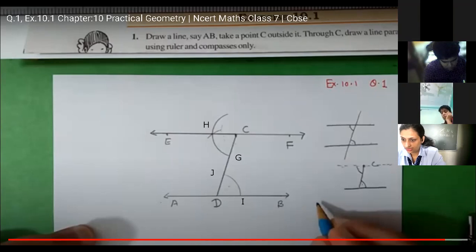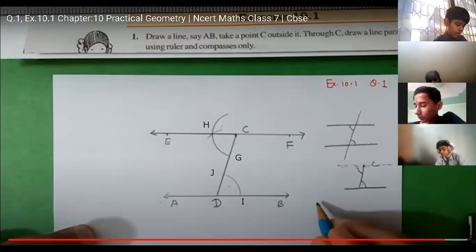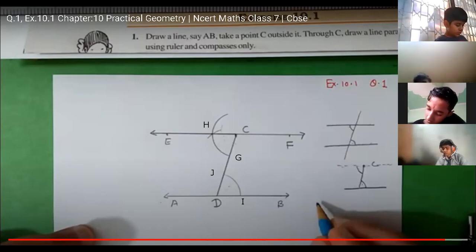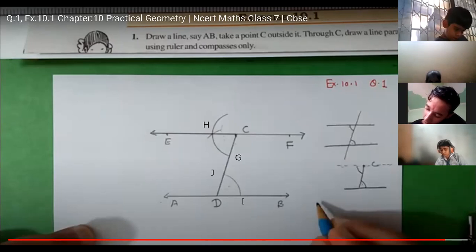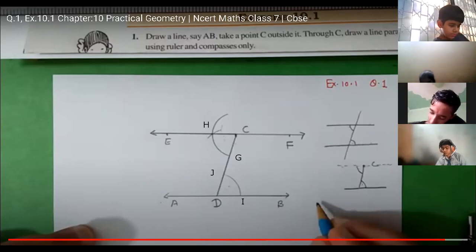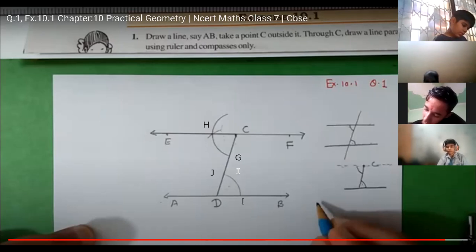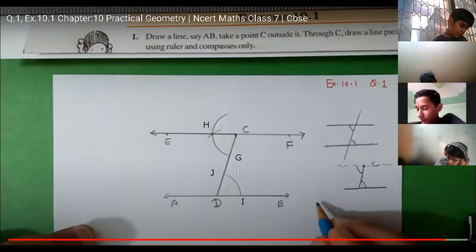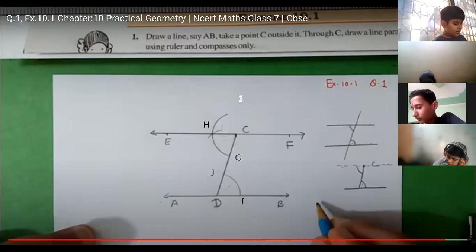Step six: Join CH and draw line EF. Therefore, AB is parallel to EF.